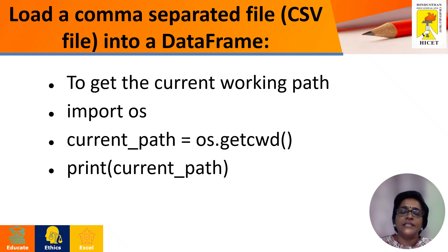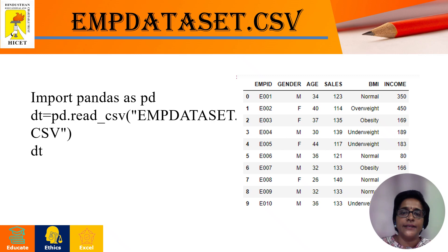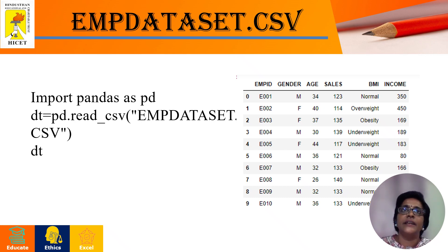Once the files have been placed in the current working directory, we are going to proceed with the first operation of loading a CSV file into the DataFrame. Let us assume we have an amp-dataset.csv file which contains the following information: amp-id, gender, age, sales, BMI, and income. All these are the fields available in the amp-dataset.csv file. The important thing is that this particular dataset file contains header information along with the CSV data.